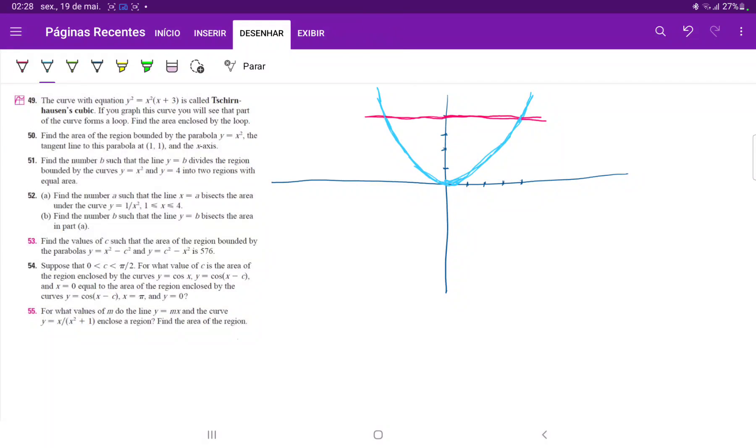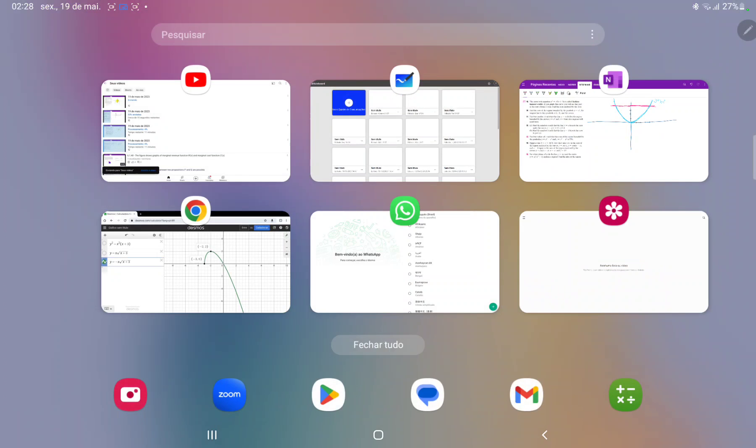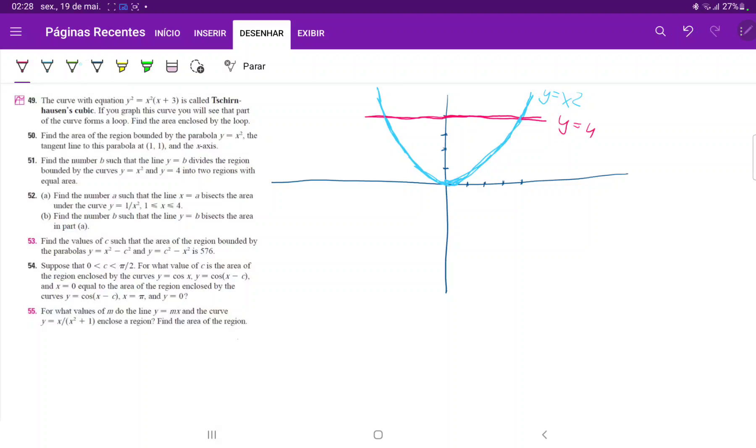For number 51, we have this area between the curve y equals x squared and the curve y equals 4. Now we want to find y equals b, so that's a straight line that maybe goes somewhere here, such that the area beneath this y equals b curve and above x squared is half the area beneath the curve y equals 4 and x squared.